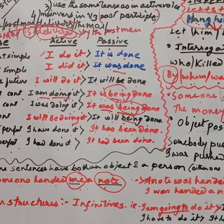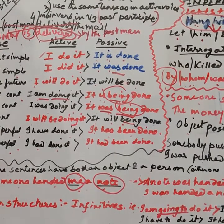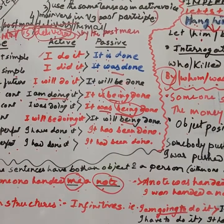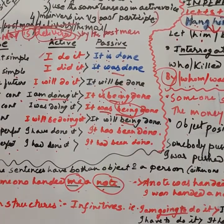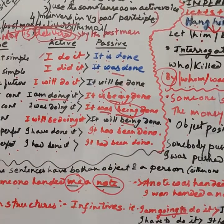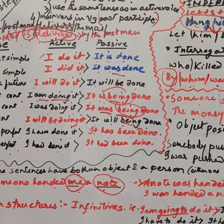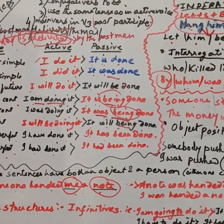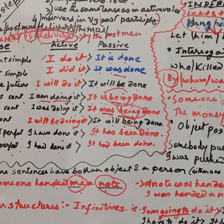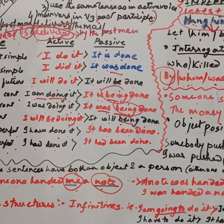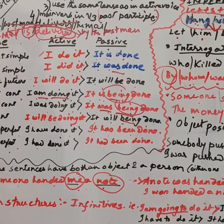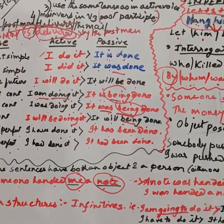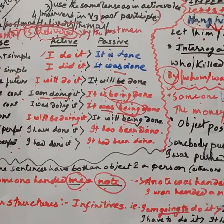Third: use the V3 form of the verb. Students often mistakenly change it to V2. And finally: pay attention to plural and singular. When you bring the object to the subject's position, you must match the verb to be with the number of the object — plural or singular accordingly.